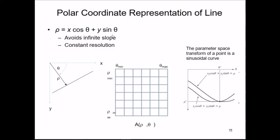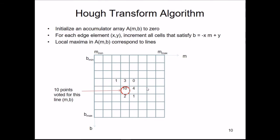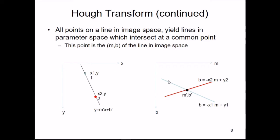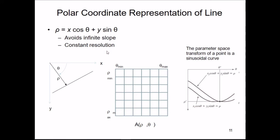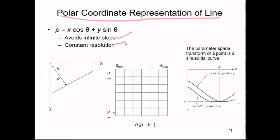There is a problem with this parametric space: if theta is 90 degrees, the slope m = tan(90°) is undefined. Also, constant resolution is not well defined. To avoid infinite slope and ensure constant resolution, we go to the polar coordinate representation of a line: ρ = x·cos(θ) + y·sin(θ). Here, θ is the angle and ρ is the perpendicular distance from the origin to the line.